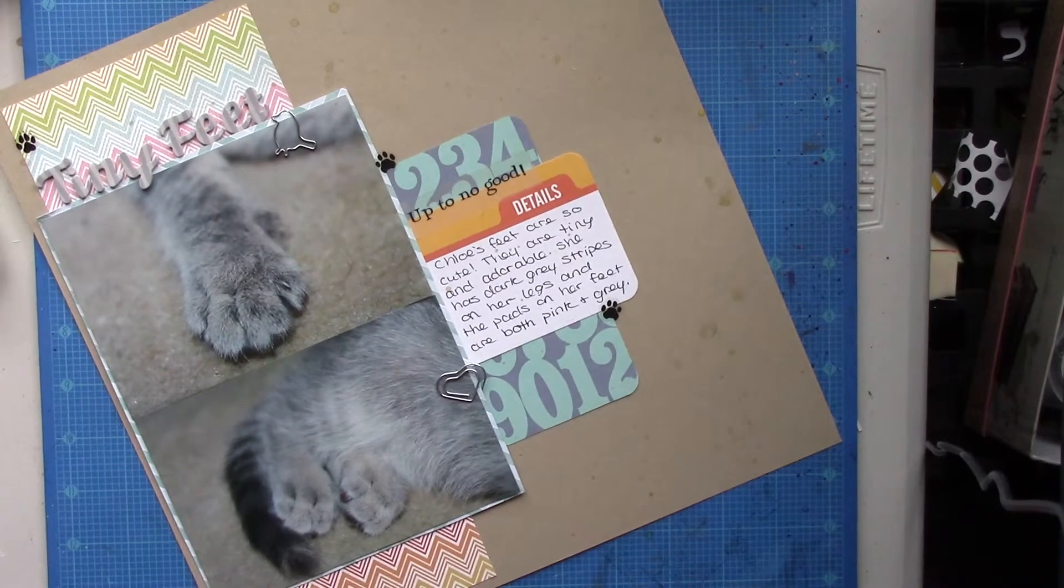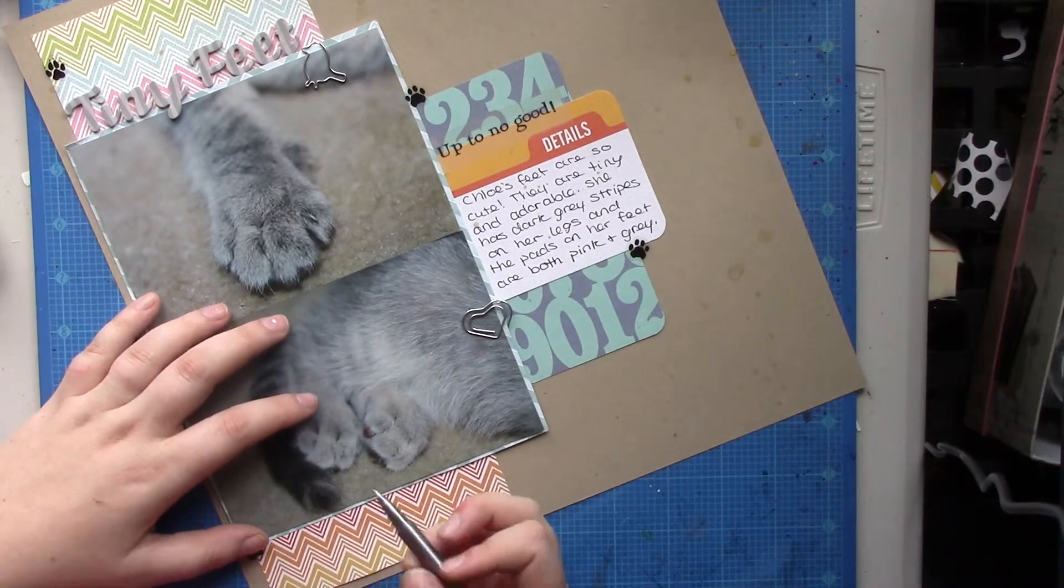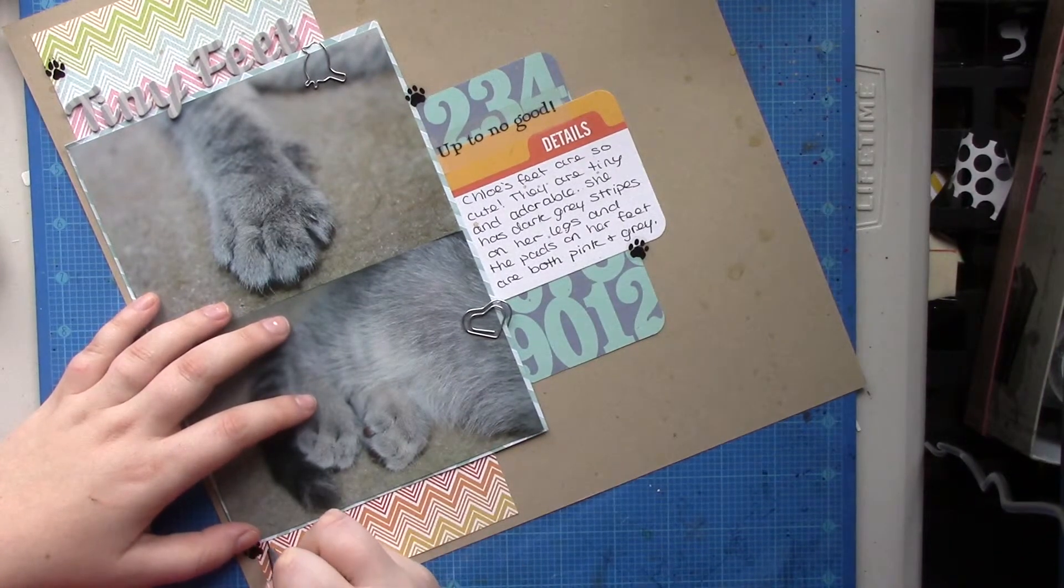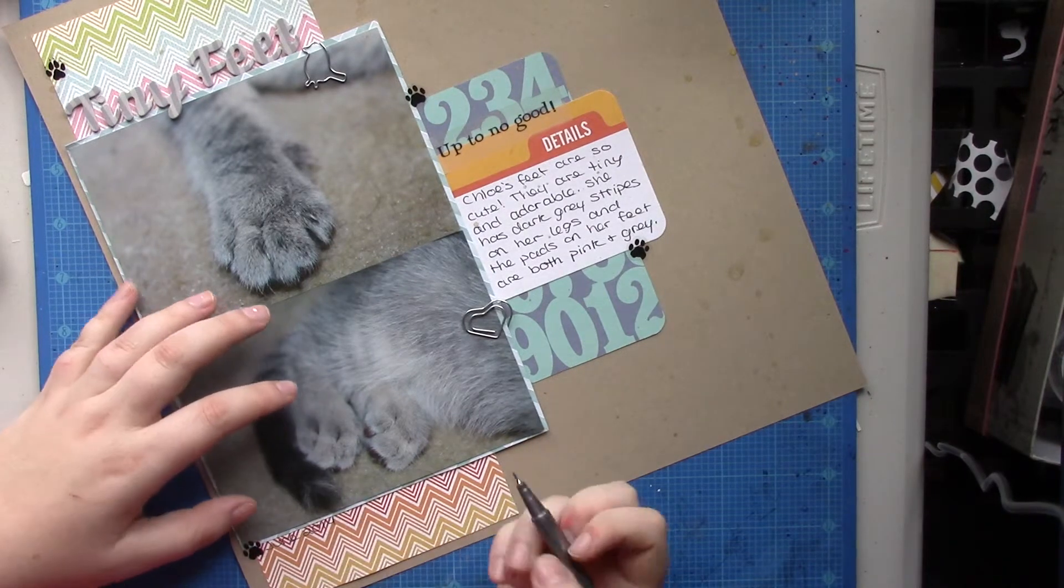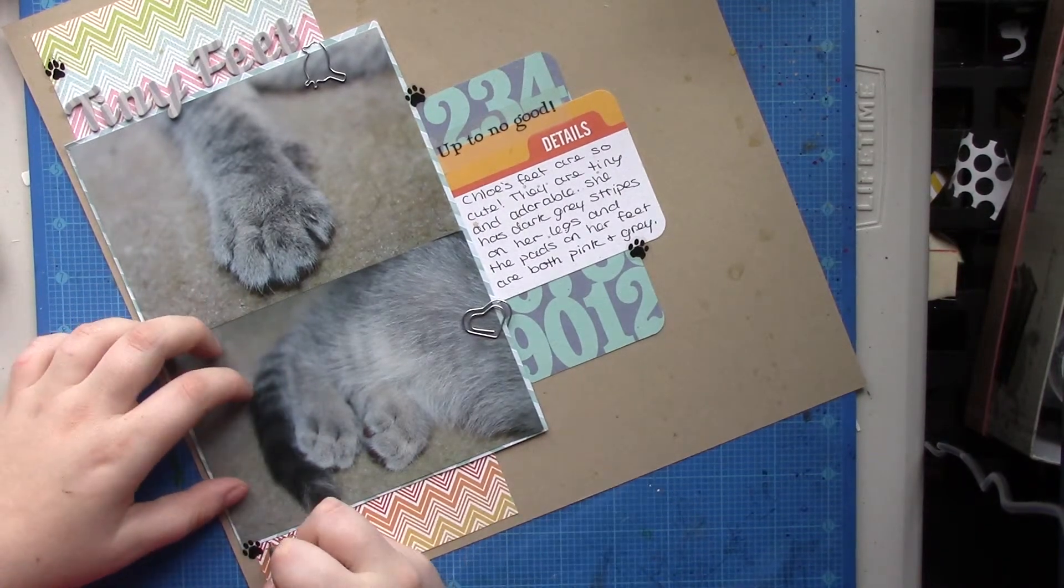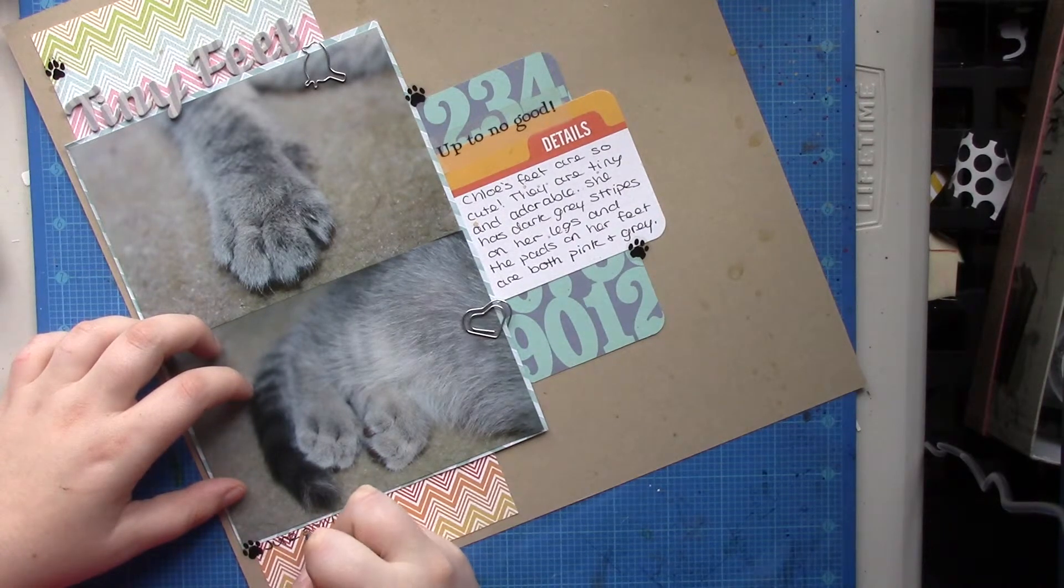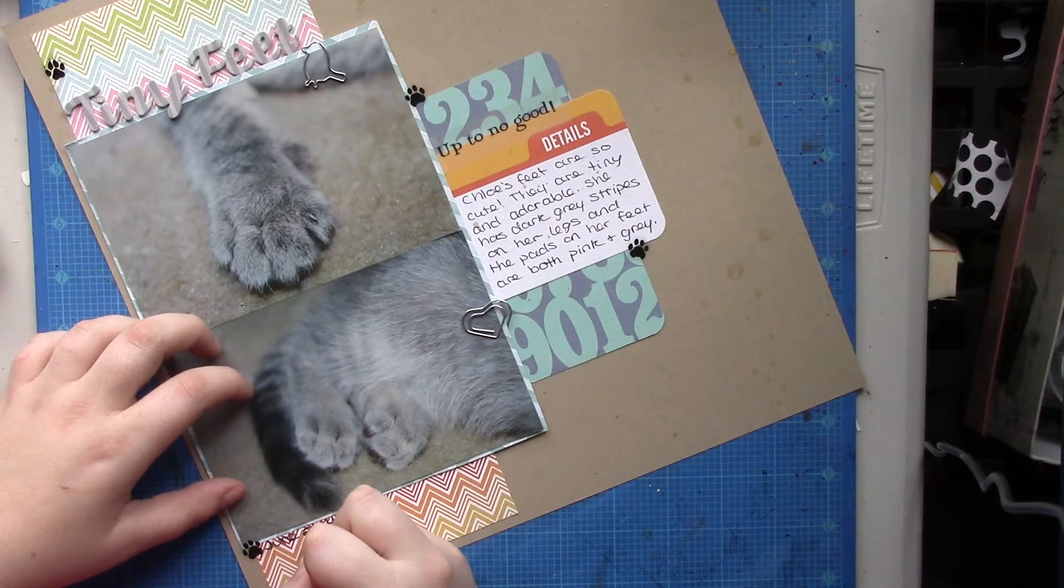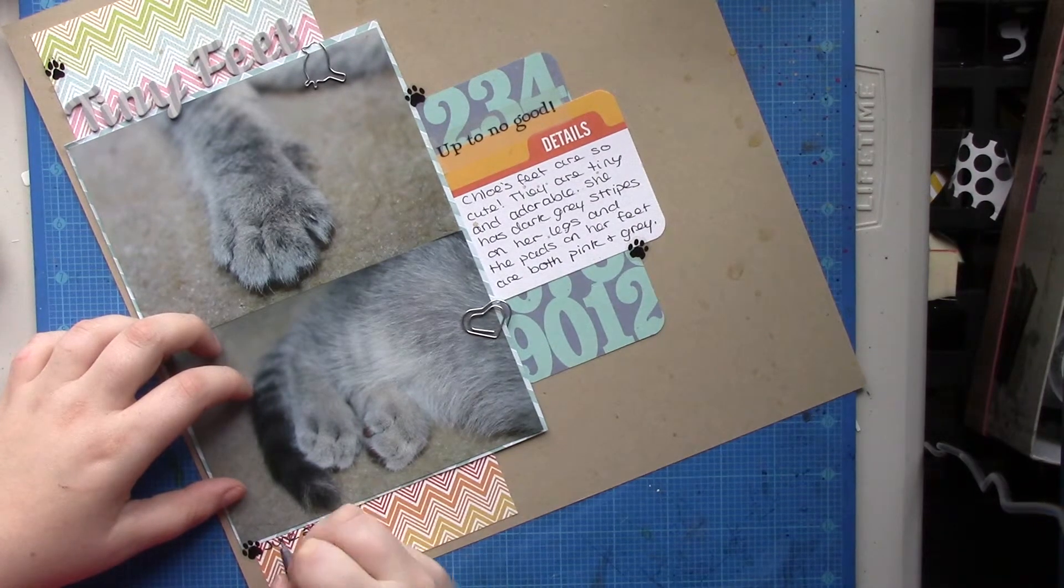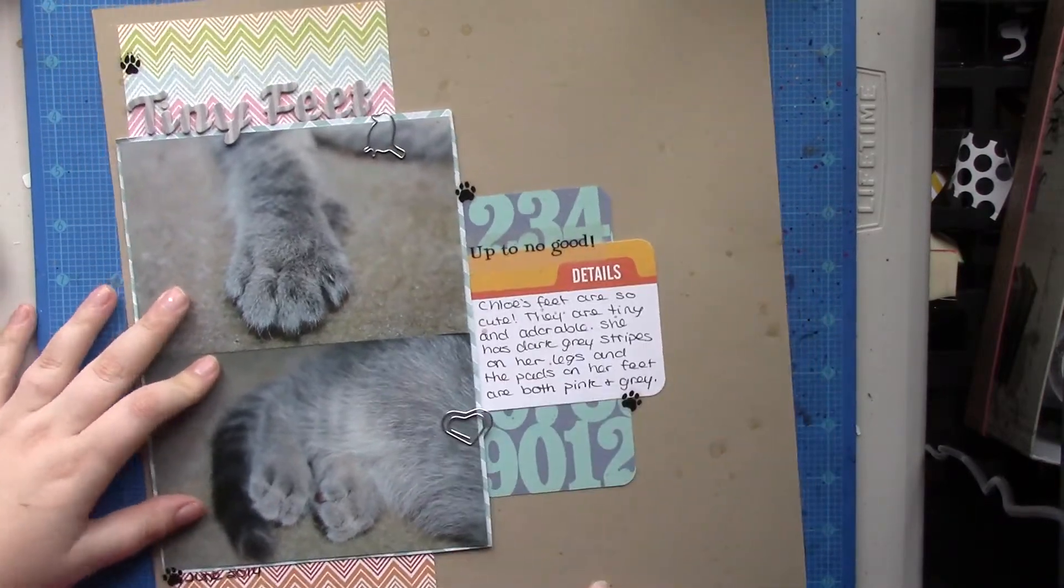So, I'm just going to write the date over here. I'm just going to put June 2014, because I don't remember the actual date. And I'm going to outline, or write that over a couple times, just so it stands out a bit on this busy pattern paper. I have no clue why my cat is upset. But, anyways.